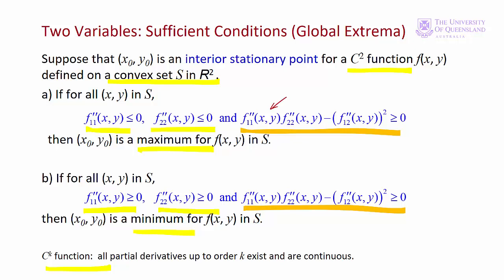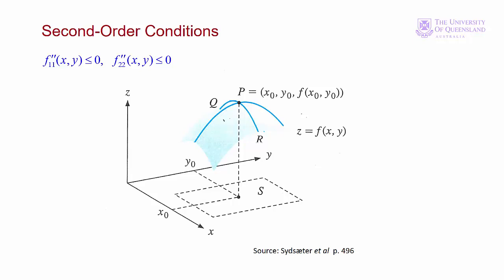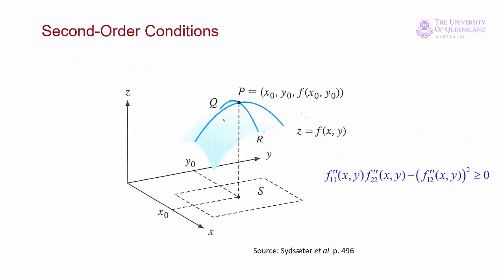If we have a maximum, both f₁₁″ and f₂₂″ are negative, so their product is positive. For the third condition to be greater than or equal to zero, the squared mixed-partial term must be small compared to that first term. The intuition behind f₁₁″ and f₂₂″ is that the slope goes from positive to negative at a maximum, so f₂₂″ — the rate of change of f₂′ — is less than or equal to zero. The same holds for the slope when holding y constant. These conditions indicate the function is likely concave.